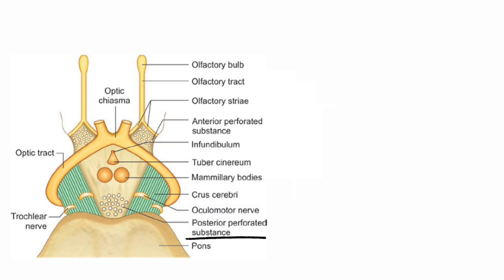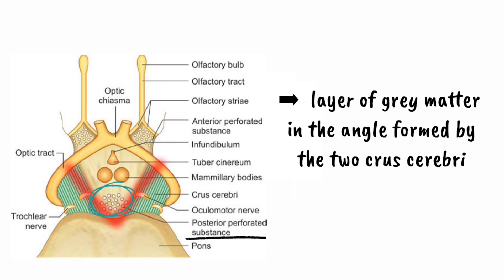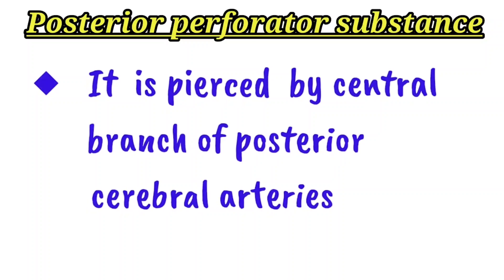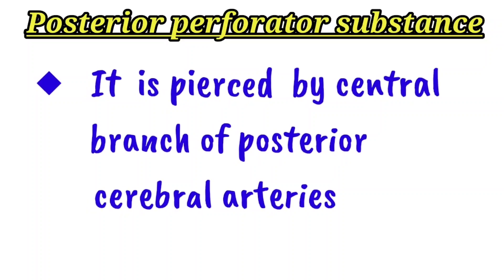If we see the diagram, pons in the region and crus cerebri of cerebral peduncles form this area. So, it is called posterior perforated substance. And why is it called posterior perforated substance? The perforated substance is pierced by central branches of posterior cerebral arteries.